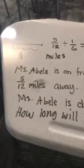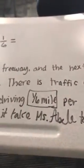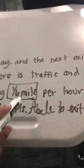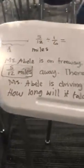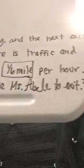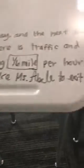So here is how to write a story problem: choose a unit — I chose miles. Then take that amount of miles and split it by the divider. In this case, we're splitting five-twelfths miles into one-sixth miles to see how many times that fits in, because it takes one hour to travel that amount. The next exit is five-twelfths of a mile away. There is traffic and Ms. Avila is driving one-sixth of a mile per hour. How long will it take Ms. Avila to exit?